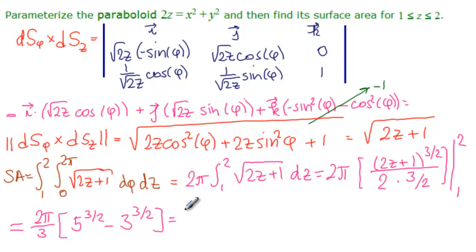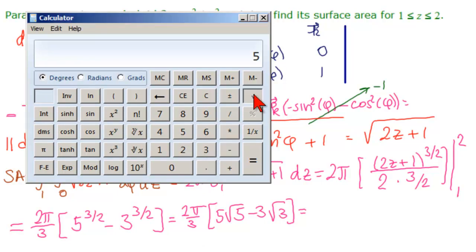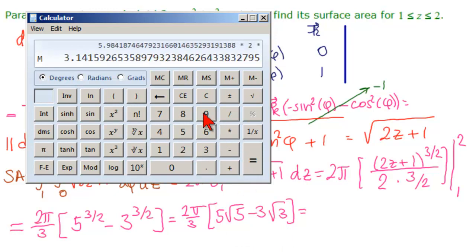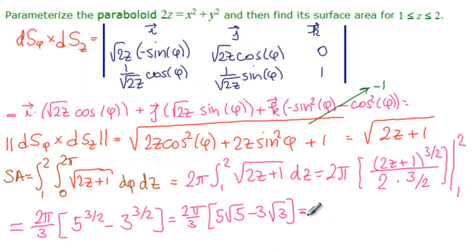If you're required to give an exact answer, that would be 2 pi over 3 times 5 square root of 5 minus 3 square root of 3. So let's get a calculator and get an answer. So 5 square root times 5 equals, put that in our memory. 3 square root times 3 equals, minus, memory recall. So this part in here is 5.984, and then times 2 times pi divided by 3 equals 12.53. Approximately equal to 12.53. So here is our exact answer and here is our approximate answer.